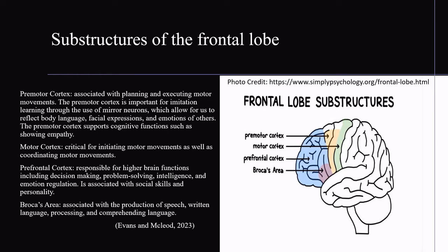Substructures of the frontal lobe. The premotor cortex is associated with planning and executing motor movements. It is important for imitation learning through the use of mirror neurons, which allow us to reflect the body language, facial expressions, and emotions of others. The premotor cortex also supports cognitive functions such as showing empathy. The motor cortex is critical for initiating and coordinating motor movements.